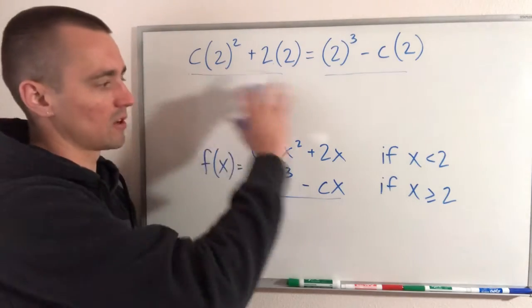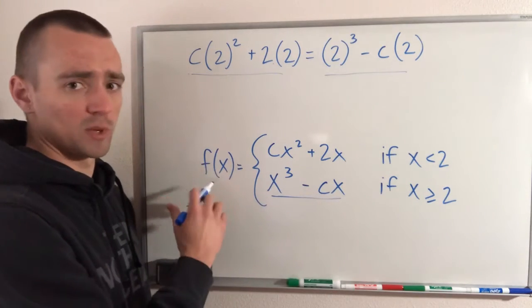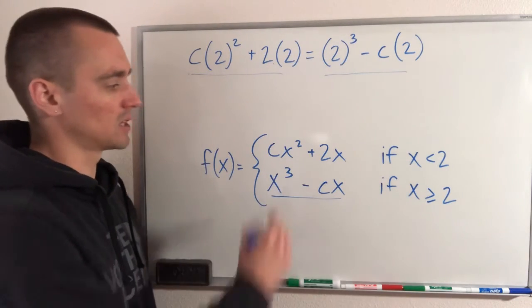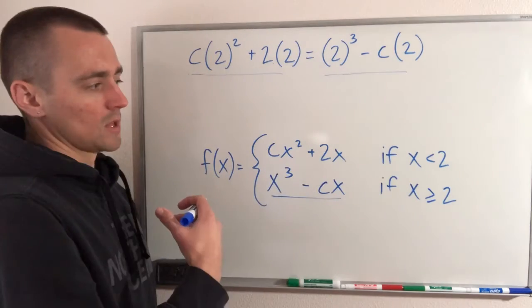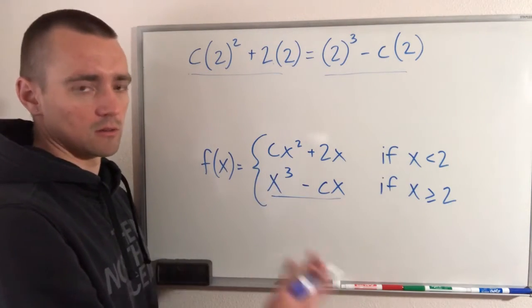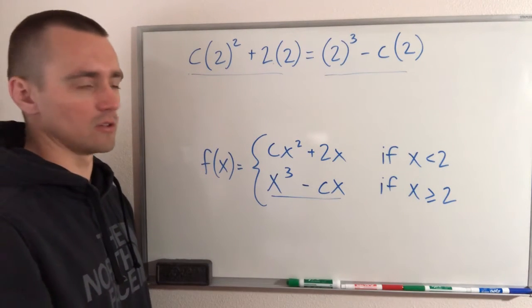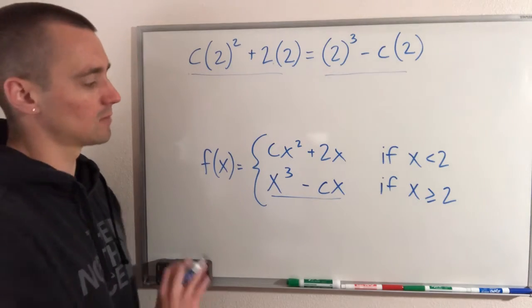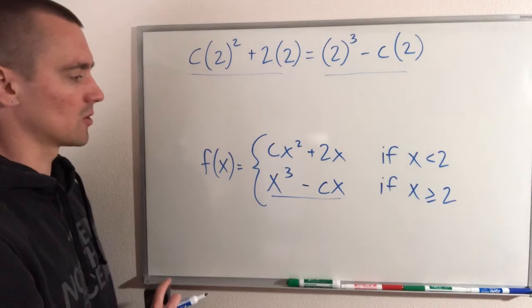And if we can show they're continuous at 2, then that shows that this function f will be continuous for all x values because we already know that each of these is continuous within their own domain. So then showing that it's continuous at x equals 2 also, that would then include all x values between negative infinity and infinity. So all we need to do is solve this equation for c. So let's go ahead and do that.